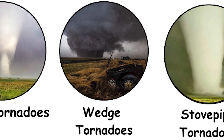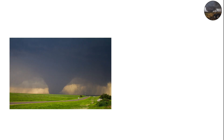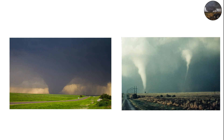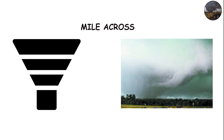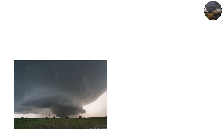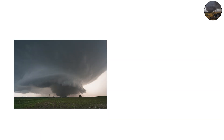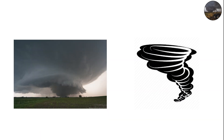Wedge tornadoes — the giants of the plains. The wedge tornado is the monster of the tornado family. These are massive, dark funnels that can span more than a mile across, often appearing so wide that it's hard to tell where the tornado ends and the sky begins.